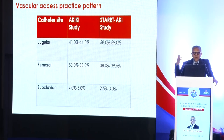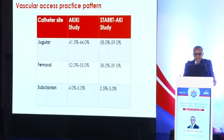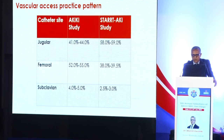Looking at recent studies on vascular access patterns, there is almost a 50-50 distribution between IJ catheters and femoral catheters, and our own institutional audit reflects similar choices.